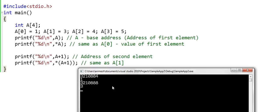First line is the address of the first element, and as we can see the second address, which is the address of the second element, is four more than the address of the first element. We have got the values right: A0 is 1 and A1 is 3.